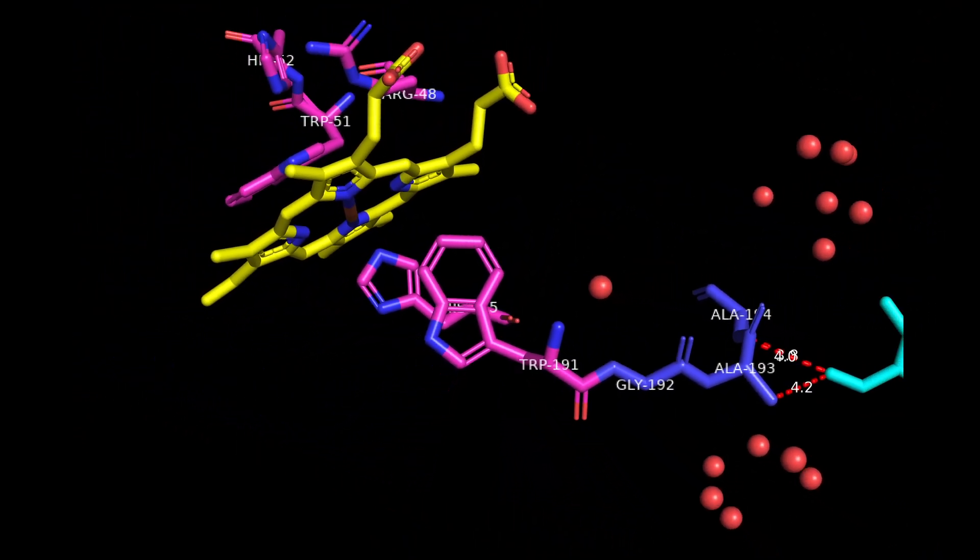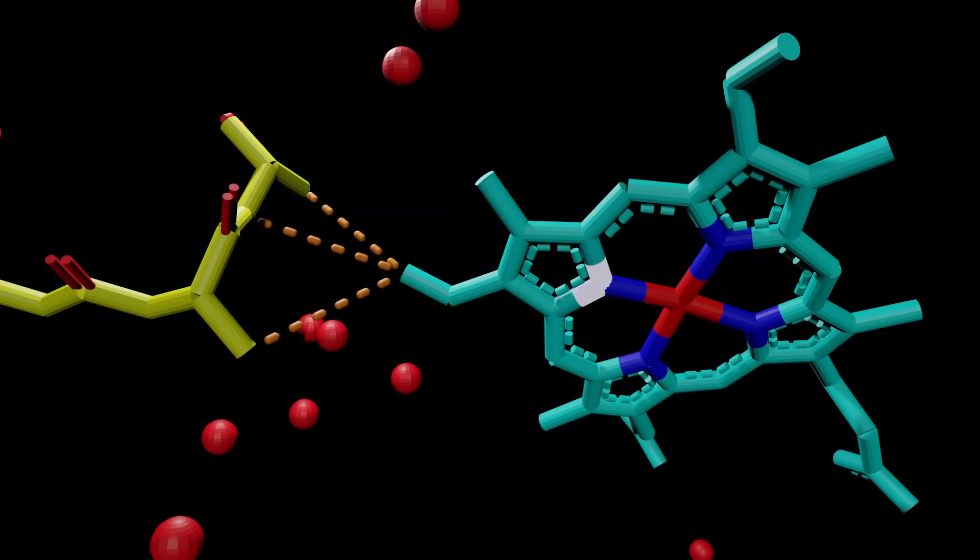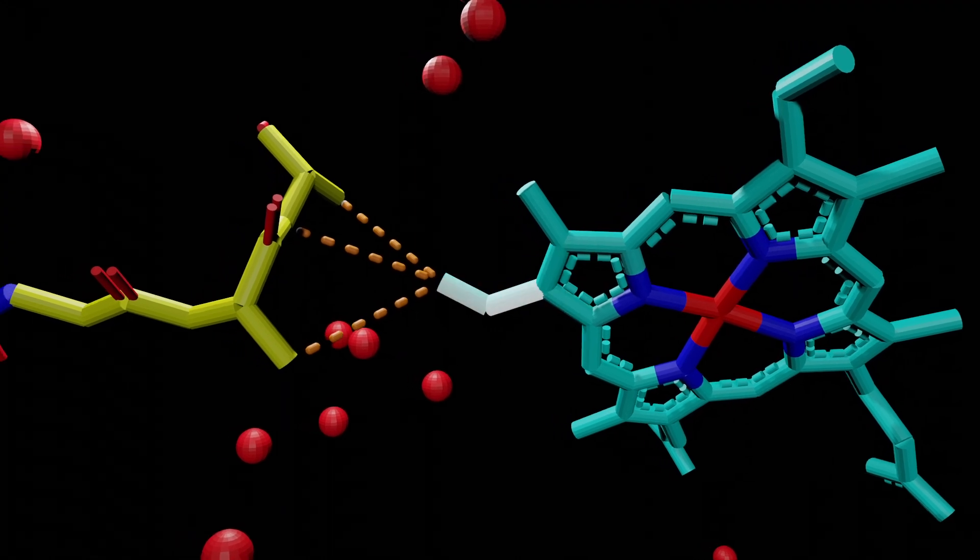Electron transfer occurs from cytochrome c to CCP without formation of any covalent bonds. The following animation is not the true representation of electron transfer.